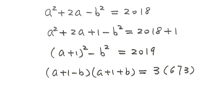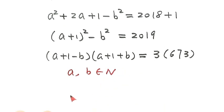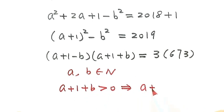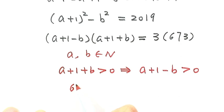Because a and b are positive integers, a plus 1 plus b is greater than zero. Since the right-hand side is greater than zero, the first factor a plus 1 minus b must also be greater than zero. Also, by checking, 673 is a prime number.